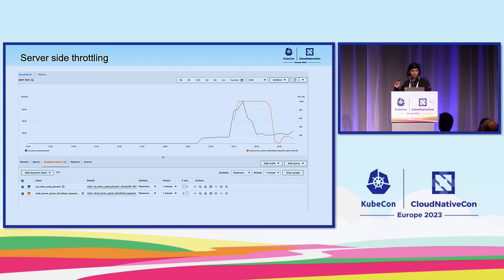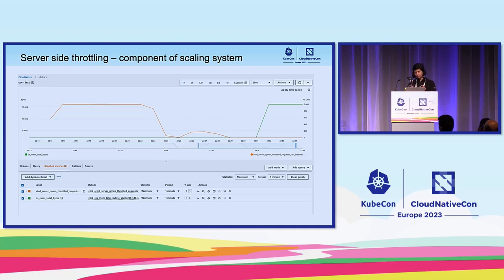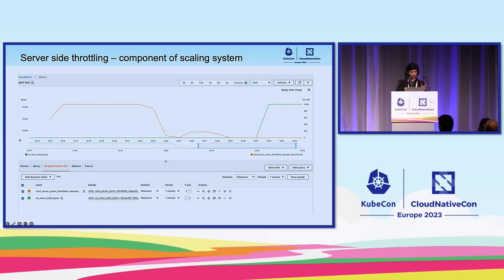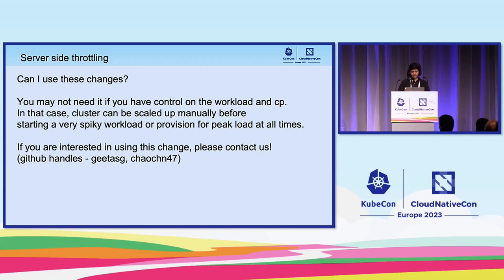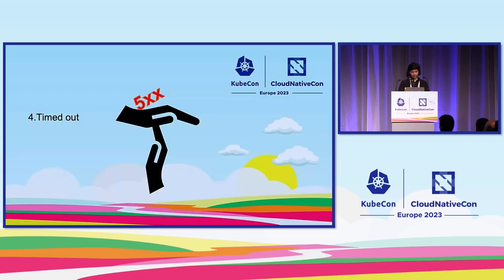This graph shows throttling in action: the blue line is memory pressure, and when it goes past 65%, the throttler (orange line) activates and starts throttling requests. A second test shows the throttler and memory pressure feeding into our scalability system — the box got scaled up from 4 GB to 16 GB because of the throttler signal and memory pressure. If you have a totally predictable workload, you may not need this and can provision for peak workload with a bigger box. If you're interested in trying out these changes, please reach out to us.